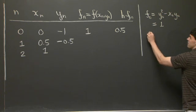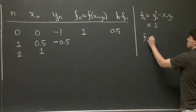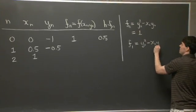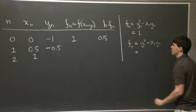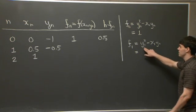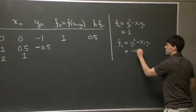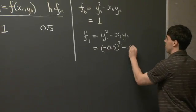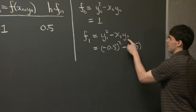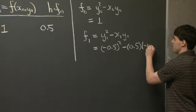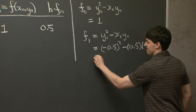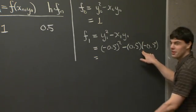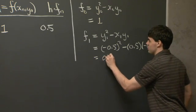Now we need to fill in f_1. So this is going to be y_1² - x_1·y_1. Now y_1 squared, this is (-0.5)². x_1 is 0.5. And y_1 is, again, -0.5. So this gives us 1/4 + 1/4, which together is just 0.5.